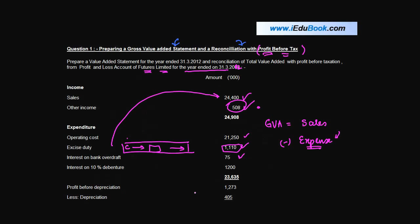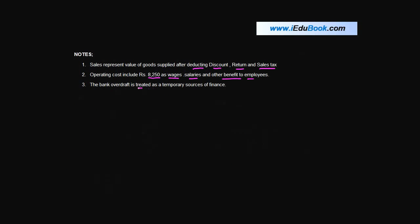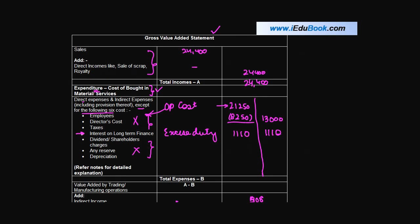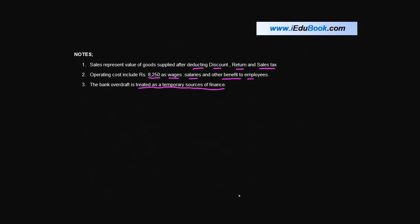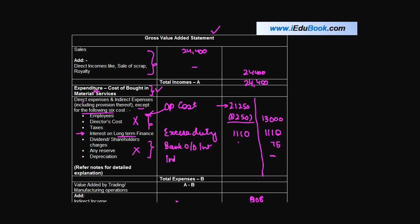The next one is interest on bank overdraft. Bank overdraft is treated as a temporary source of finance. What is excluded is interest on long-term finance. But you are told that the bank OD interest is a temporary finance interest. Therefore, it will be treated as an expense and not an application. Interest on 10% debentures - debentures are obviously long-term finance. So we will not reduce anything on account of interest on debentures from here.